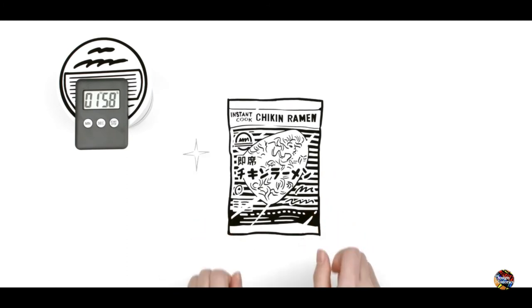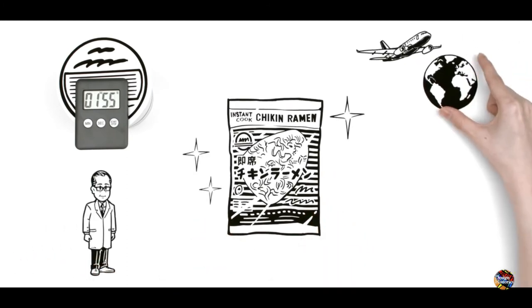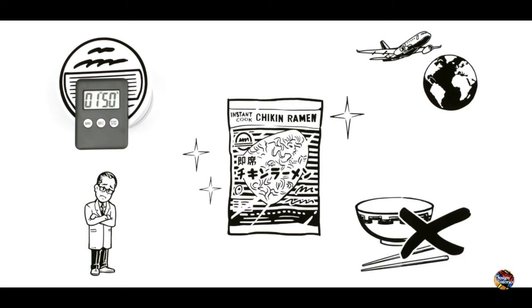Instant ramen was a huge hit. Momofuku wanted to expand overseas, but there was a problem. People in many countries weren't used to eating from bowls with chopsticks.